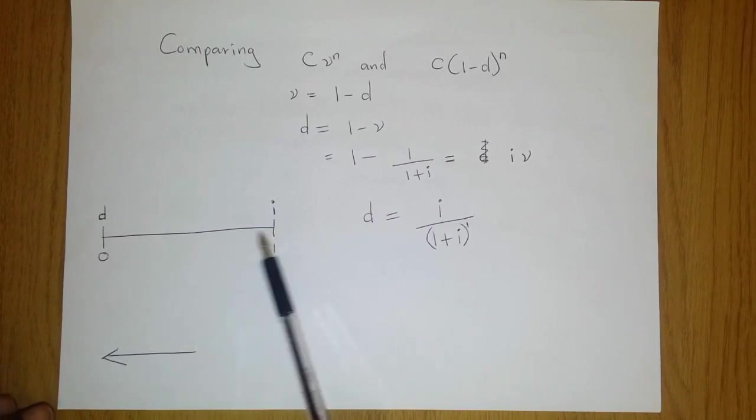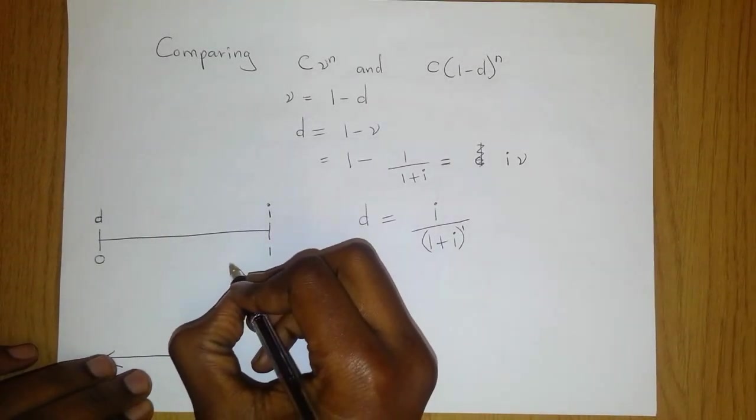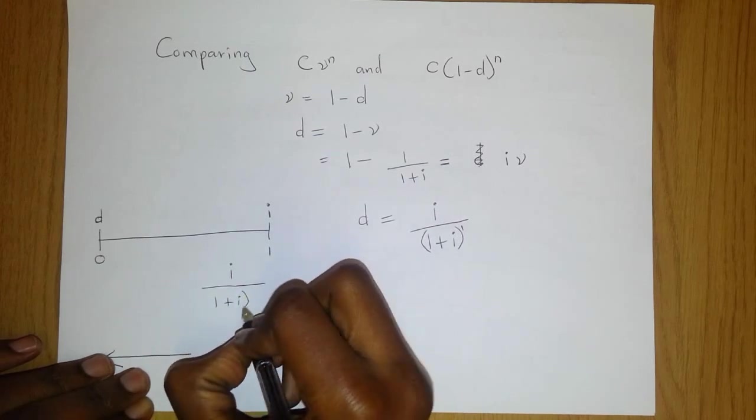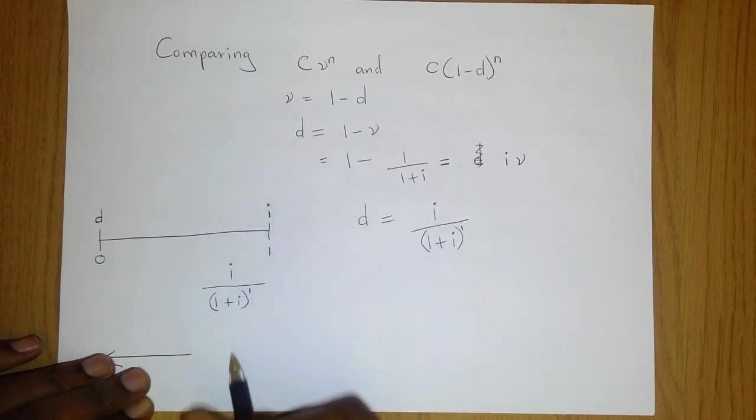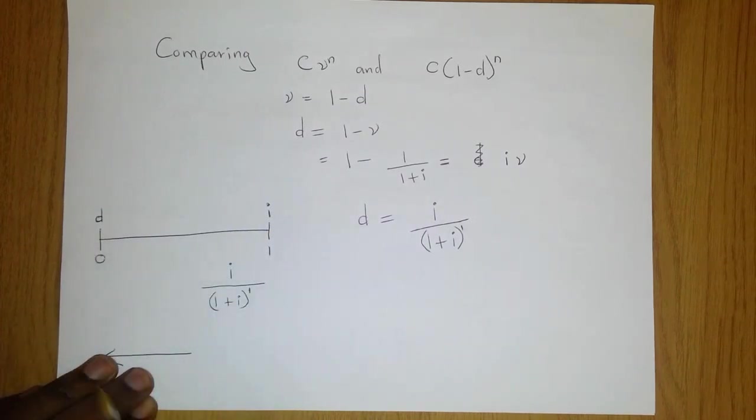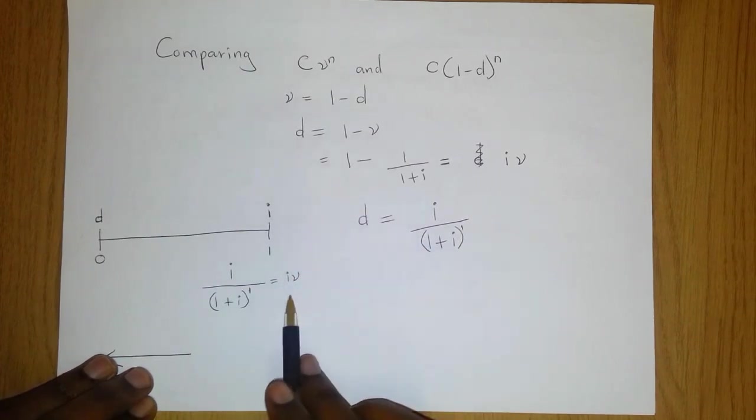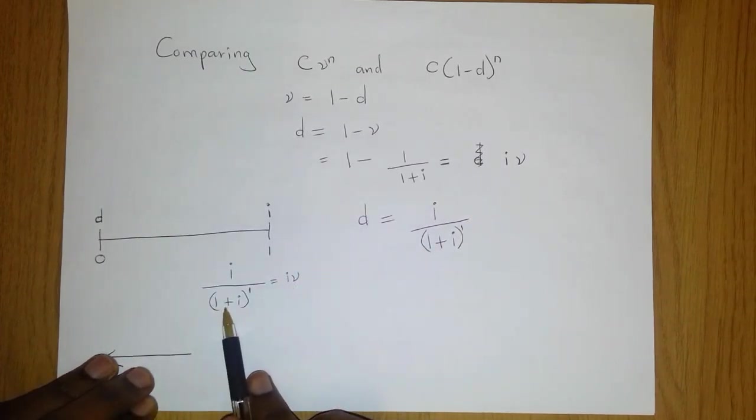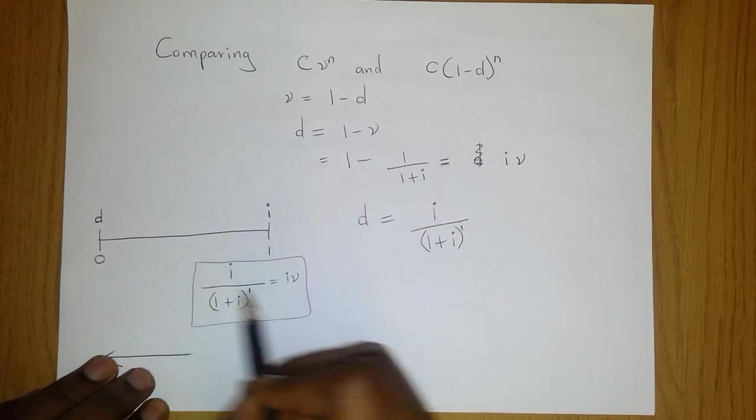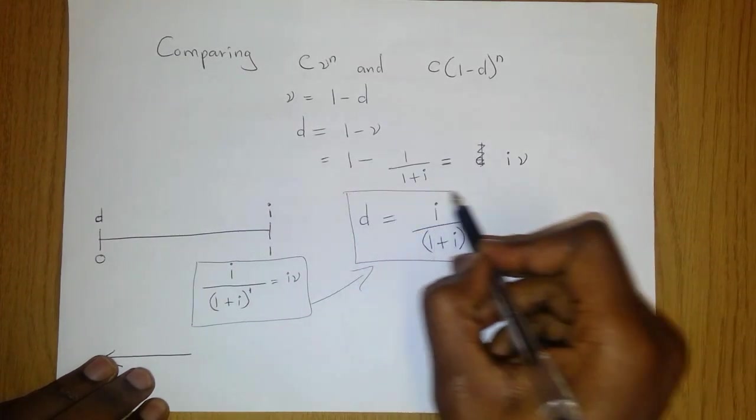So how do we discount i from time 1 to time 0? If you can remember what you did earlier, it's simply i divided by 1 plus i over one period of time. This discounts i back to time 0. This is also i times nu, when nu is 1 over 1 plus i.